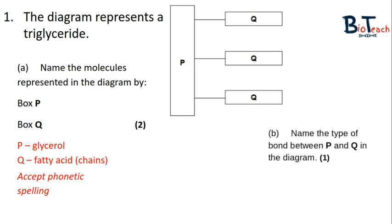Part B of this question asks you to name the type of bond between P and Q in the diagram. Remember that P and Q are the glycerol and the fatty acids, and this is a triglyceride. So the only bond that this could represent is the ester bond.